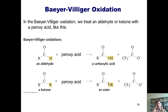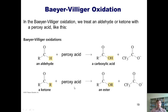An aldehyde treated with a peroxy acid gets an oxygen inserted between the hydrogen and the carbon, giving a carboxylic acid. Similarly, a ketone treated with a peroxy acid gets an oxygen inserted between the carbonyl carbon and one of the alkyl groups, giving an ester.